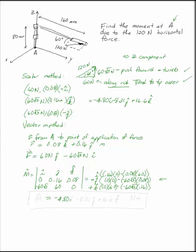That gives me, if you multiply that out, minus 4.80i, minus 8.31j, plus 16.6k. That's the answer, whether you use a vector method or a scalar method. Don't forget your units. This is in newton meters.